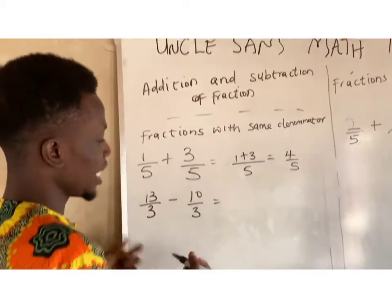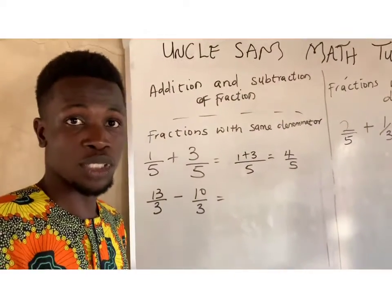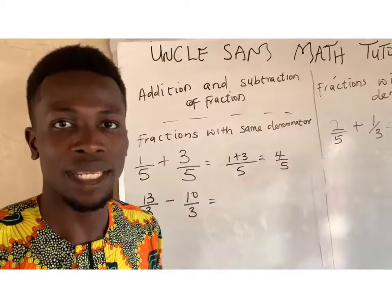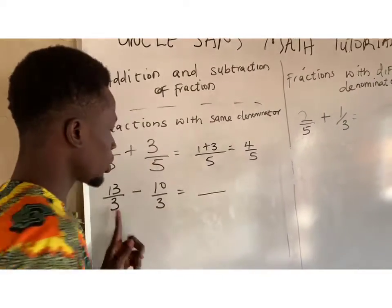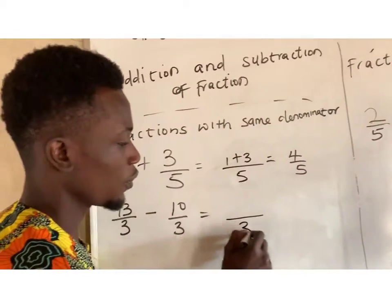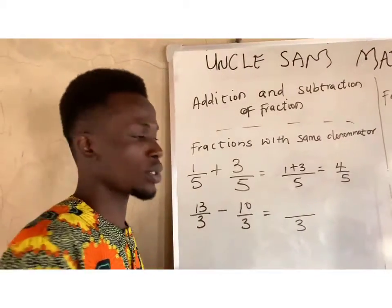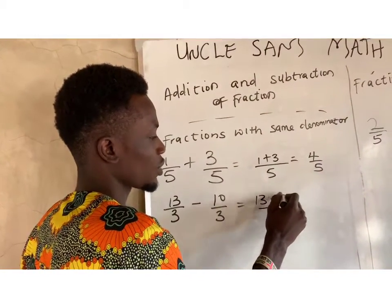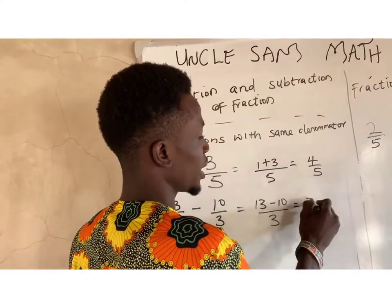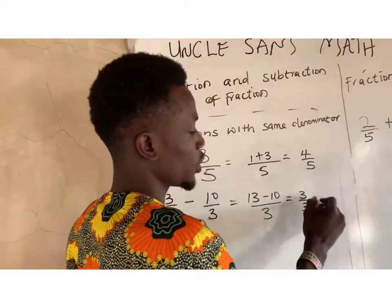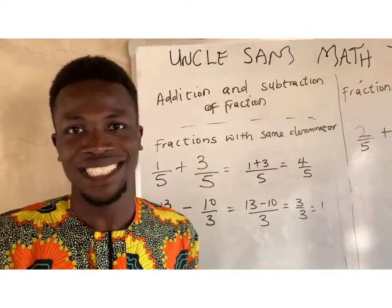The same thing applies when subtracting fractions with the same denominator — it is the same approach. I will write down the common denominator, which is 3, then subtract the numerators: 13 minus 10 gives us 3 over 3. If you reduce it, that gives us 1. So that is it — there is not much work here.